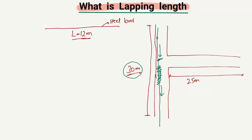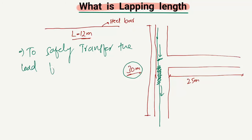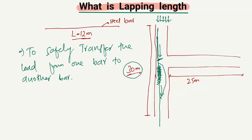This is the main reason that why we provide lapping in steel bars — to safely transfer the load and stresses from one steel bar to another. In this way, the load coming on this column is carried by the steel bar, transferred through the lapping length to the next bar, and simply carried down to the foundation.